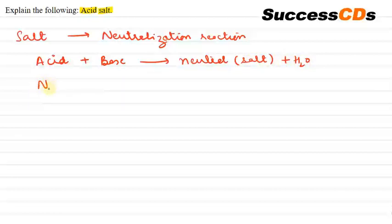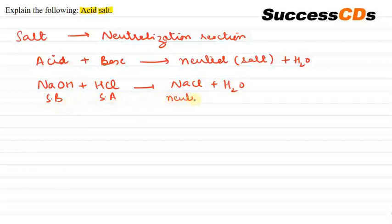For example, if I have a base NaOH and an acid HCl, what will it make? NaOH is a strong base and HCl is a strong acid. So the ions are cancelled and we have a neutral salt.